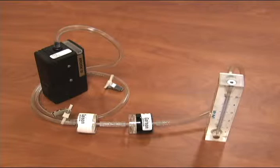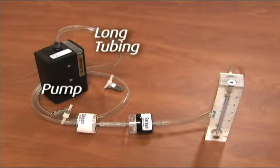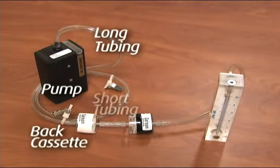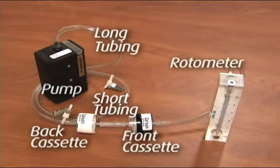The order of the components for calibration is pump, long piece of tubing with lure adapter, back filter cassette, short tubing with two lure adapters, front filter cassette, and rotometer.